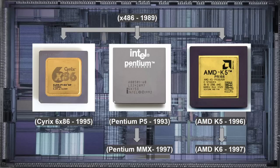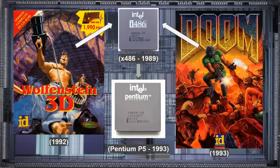Enter id Software, a game development company who was just about to release a new game that would shake up the market. That game was Quake. They had previously published two hit titles, Wolfenstein 3D in 1992 and Doom in 1993, both written targeting the now-ubiquitous 486 processor. However, they wanted to break ground with their newest title, and to do so they would have to go beyond the outdated 486 processor and look to the future.